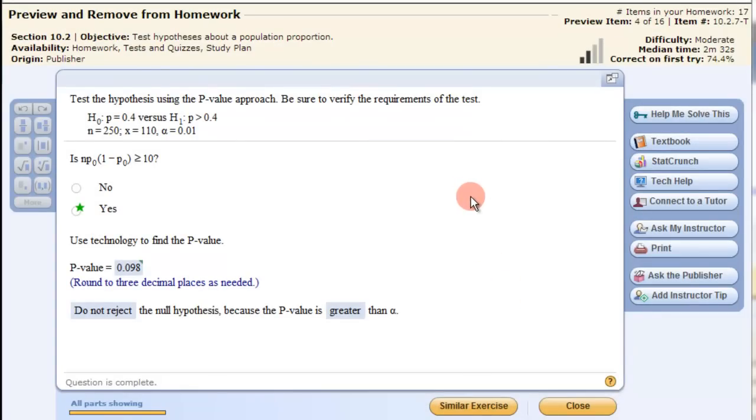In this video we're going to look at using StatCrunch for testing a hypothesis using a p-value approach. So here's our hypothesis, and we have n=250, x=110, and the significance level 0.01.